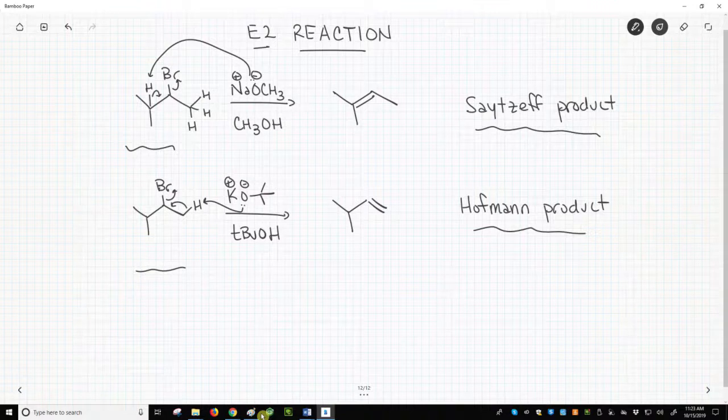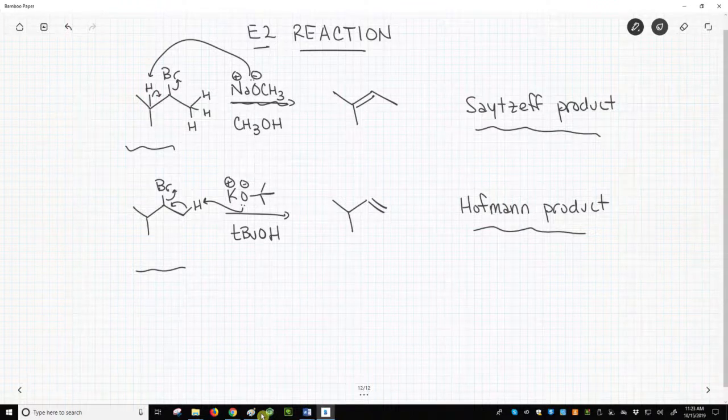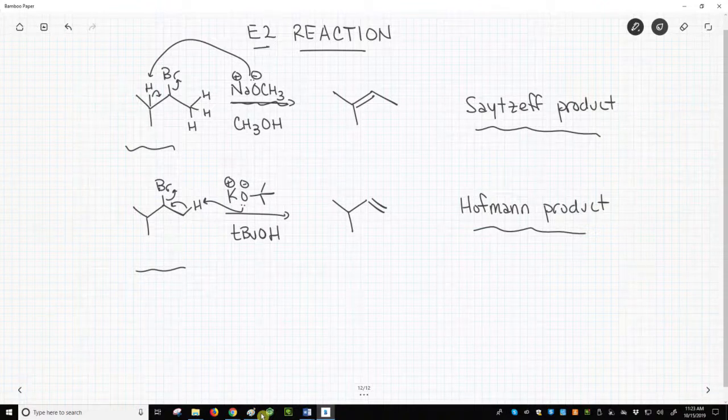Methoxide is not incorporated into the structure of the final product. T-butoxide is not part of the product, therefore the base is almost always placed as a reagent over the arrow while the alkyl halide is the featured starting material to the left of the arrow.